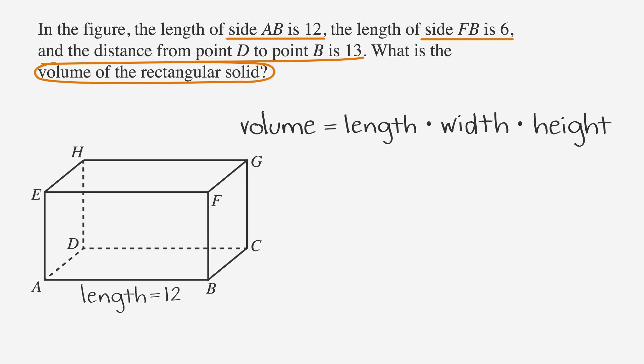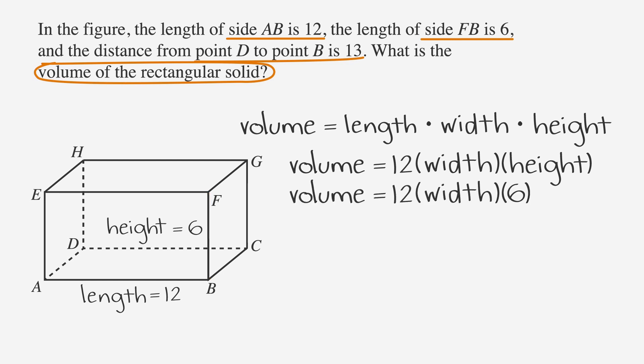Now let's substitute 12 for the length in our volume formula. So we have volume equals 12 times width times height. We also know that side FB has a length of 6. Let's label that as the height. Now we can substitute height with 6 in the volume formula, giving us 12 times width times 6.